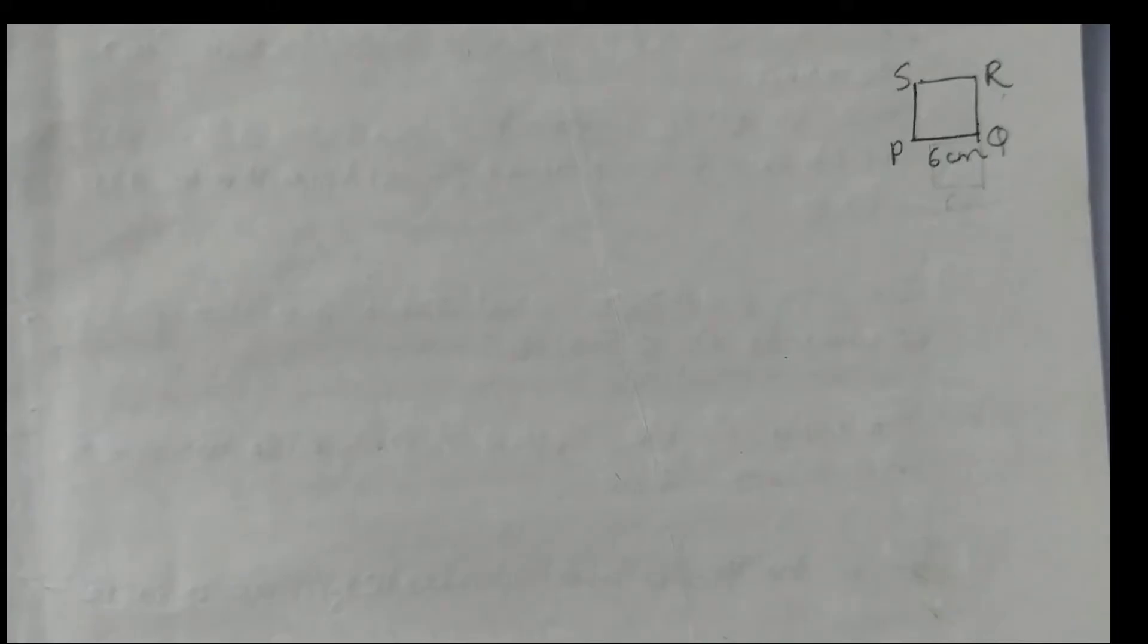The first step is always draw a rough sketch of the figure. So we are going to draw a square that means it's going to be all equal sides and this is going to be 6 cm like this and we can label it as PQRS. So this is what we are going to construct.